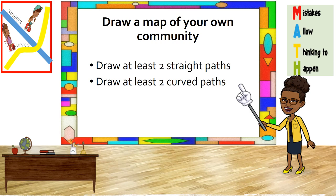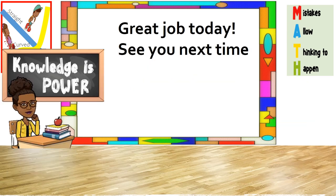For our final activity today, you are going to draw a map of your own community. I would like you to draw at least two straight paths and two curved paths. Do not forget, boys and girls, you have to write the names of your paths in your drawing. Thank you so much, boys and girls — you did a great job today. I look forward to seeing you next time. Bye!